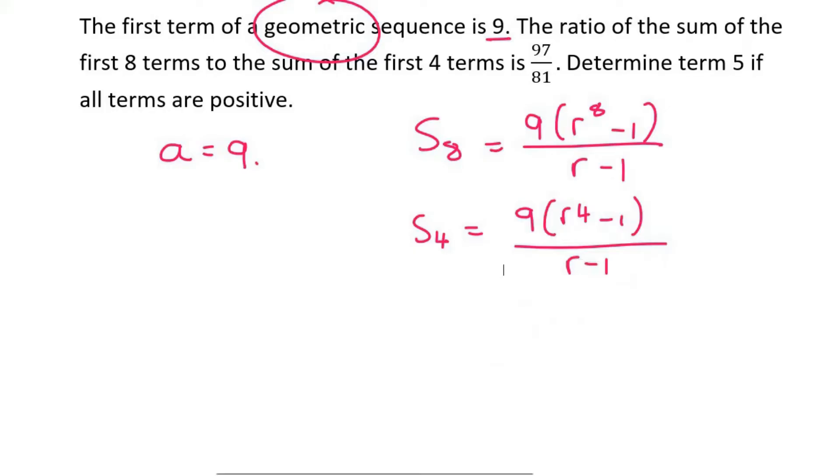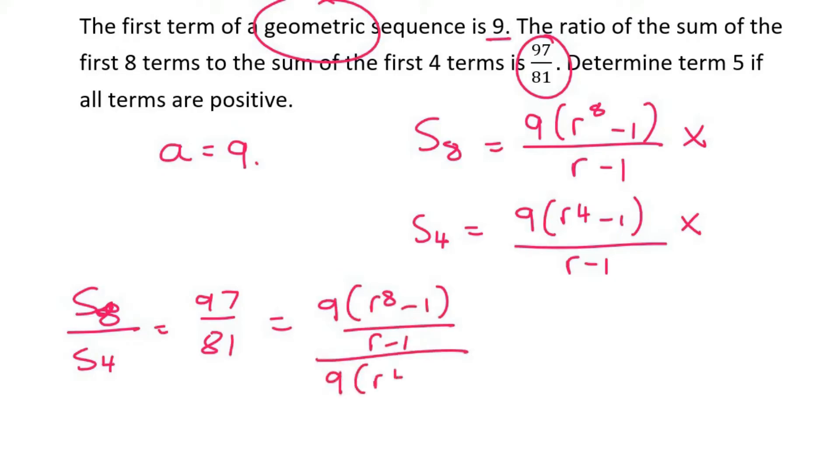Okay, they tell us that the ratio of the 8th sum, which is this one, to the 4th one is 97 over 81. What that means mathematically is that S8 over S4 is 97 over 81, which is going to be 9(R^8 minus 1) over (R minus 1) over 9(R^4 minus 1) over (R minus 1).